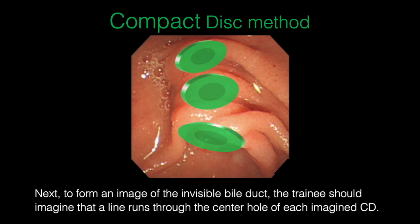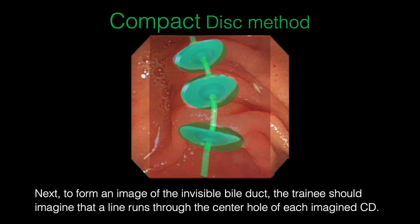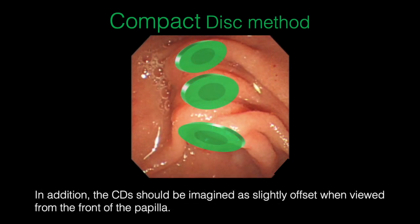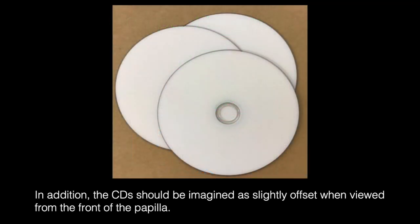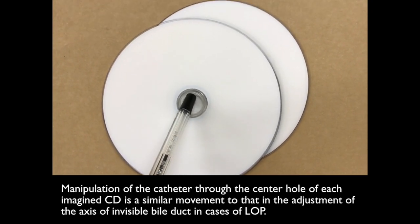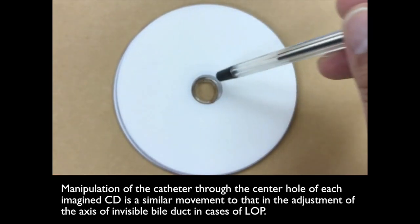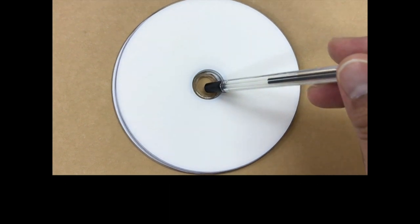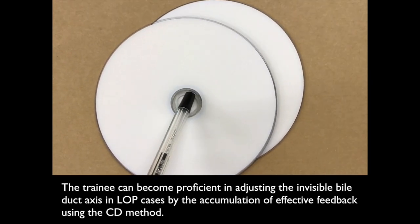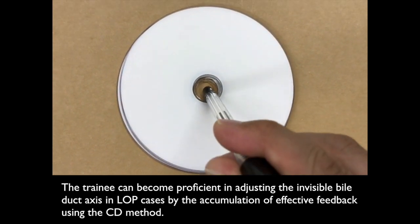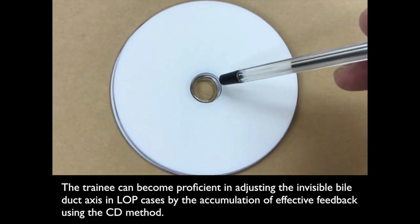Next, to form an image of the invisible bile duct, the trainee should imagine that a line runs through the center hole of each imagined CD. In addition, the CDs should be imaged as slightly offset when viewed from the front of the papilla. Manipulation of the catheter through the center hole of each imagined CD is a similar movement to the adjustment of the axis of the invisible bile duct in cases of long oral protrusion. The trainee can become proficient in adjusting the invisible bile duct axis by accumulating feedback using the CD method.